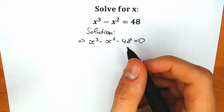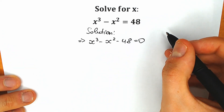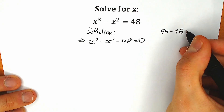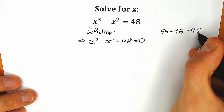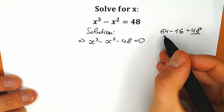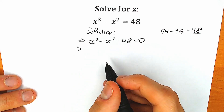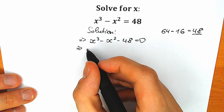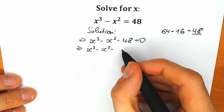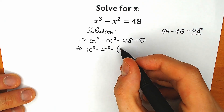Right now a really tricky move. Instead of this 48, we can easily write 64 minus 16, because 64 minus 16 equals 48. So this 48 we can easily swap for 64 minus 16. So as a result what do we have? x-cube minus x-square minus, and instead of 48 we write 64 minus 16.